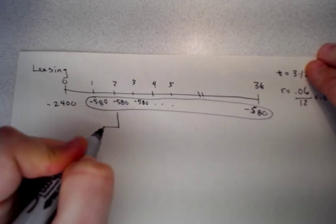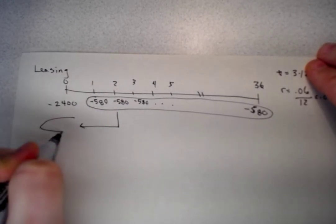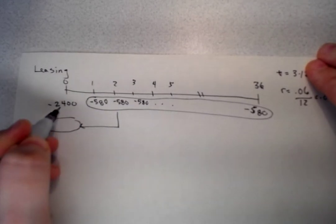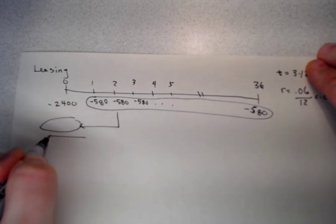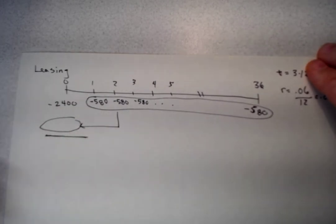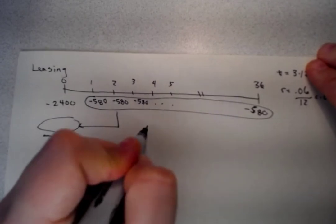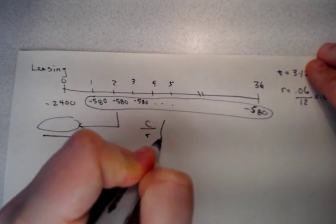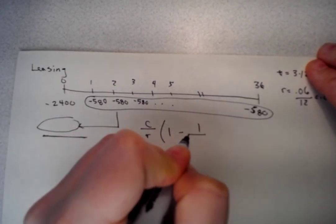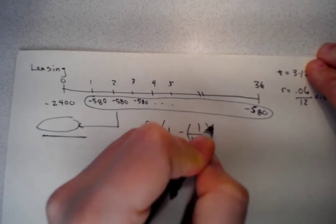We can use the annuity equation to discount this back. We're going to add this value to the $2,400, and that will give us the total cost of leasing this car. So we're going to do C over R times 1 minus 1 over 1 plus R to the T.